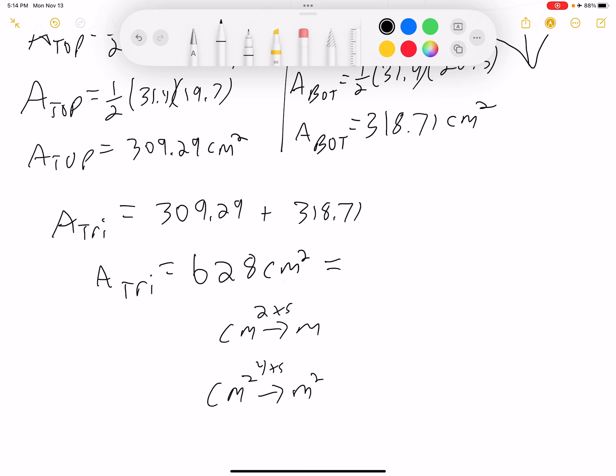So for us, we're going to move the decimal point over four times. So we have one, two, three, four. So our answer would be 0.0628 square meters.